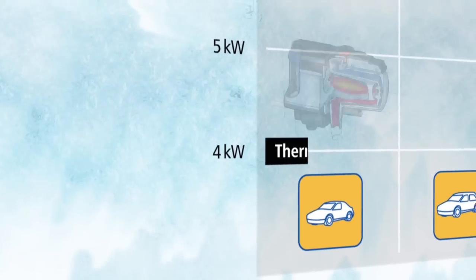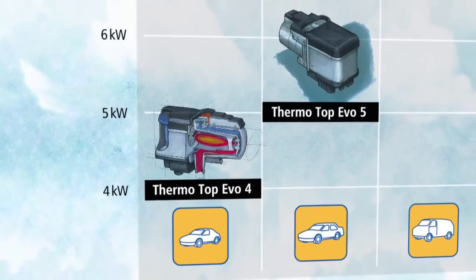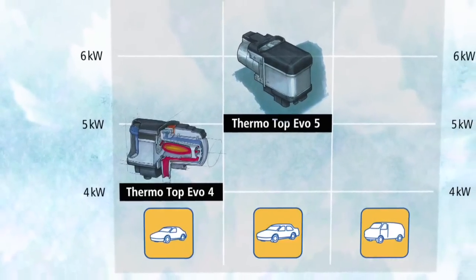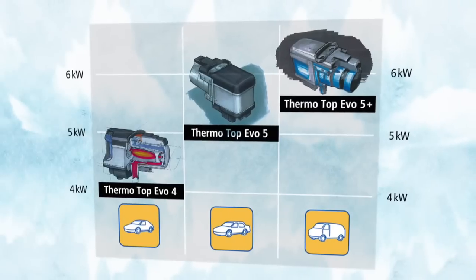Top performance that is now possible in any vehicle class. To optimally satisfy the specific requirements of the different vehicle classes, Webasto has developed three ThermoTop EVO heater models. The ThermoTop EVO 4 for small cars. The EVO 5 for compact and middle range vehicles. And for vehicles with a large interior, we can offer our customers the ThermoTop EVO 5 Plus.